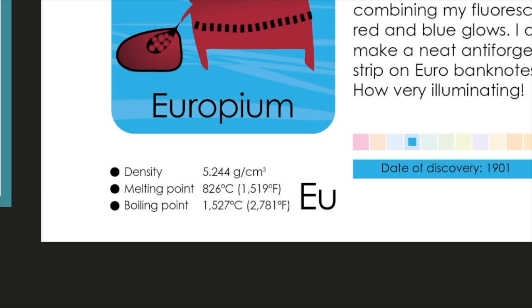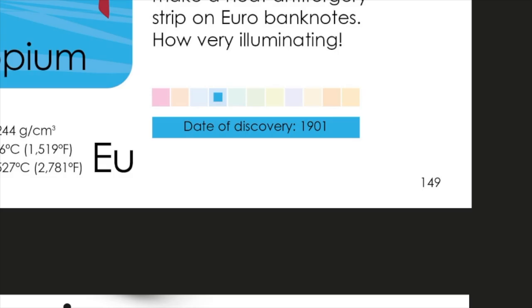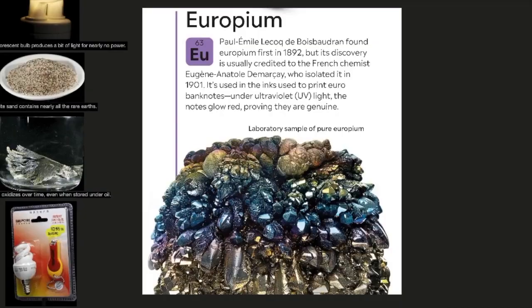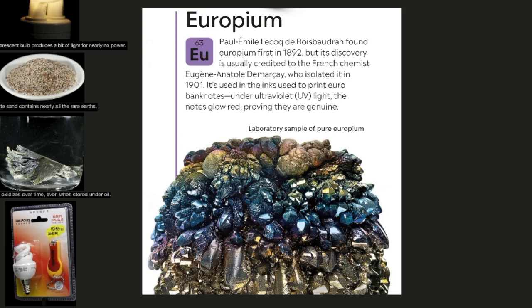Its density is 5.244 grams per centimeters cubed, its melting point is 826 degrees Celsius or 1519 degrees Fahrenheit. Its boiling point is 1527 degrees Celsius or 2781 degrees Fahrenheit. Its chemical symbol again is EU, and its date of discovery was in 1901. Europium, element number 63, chemical symbol EU.